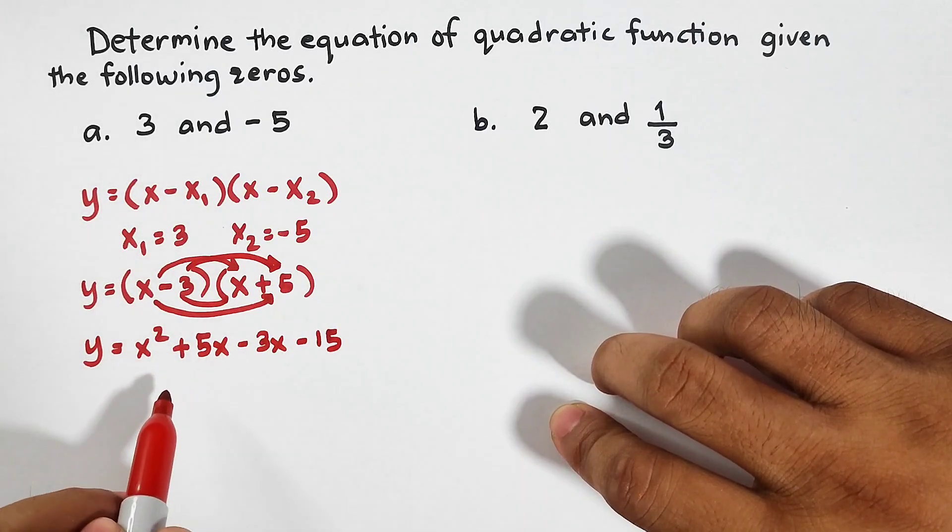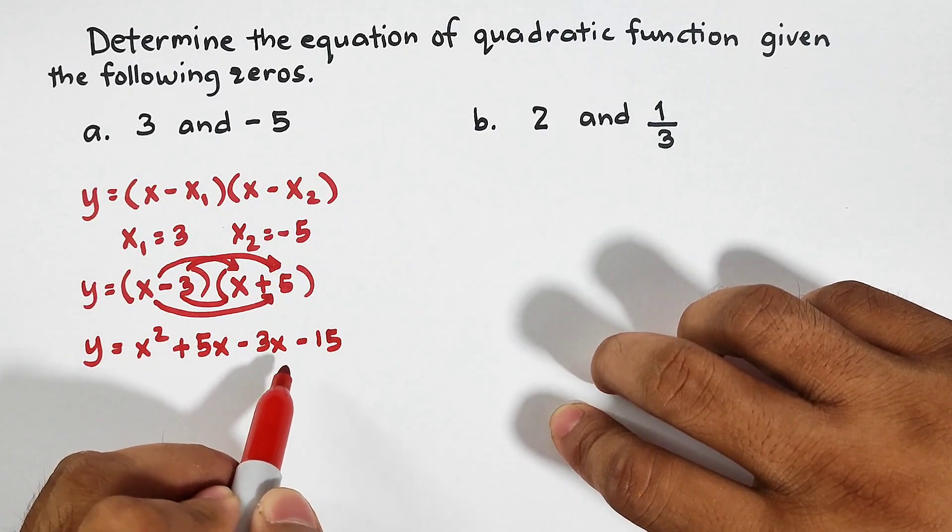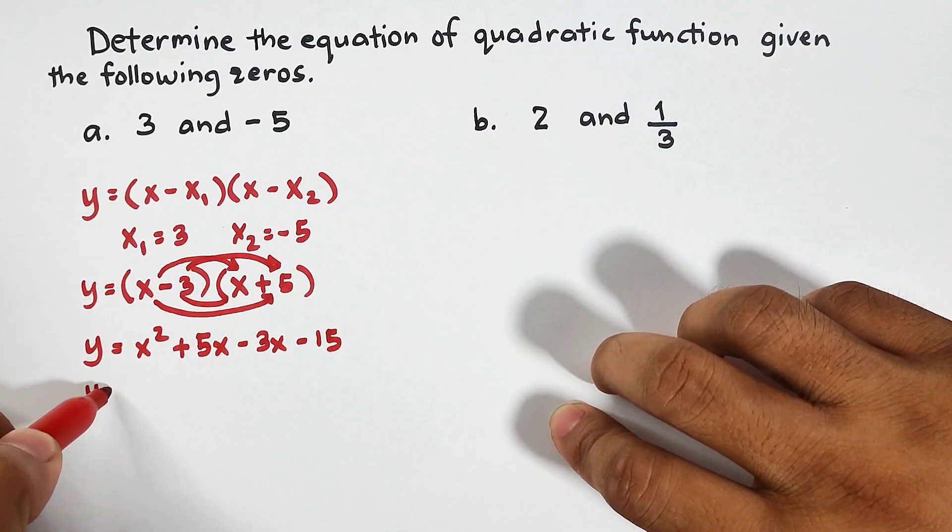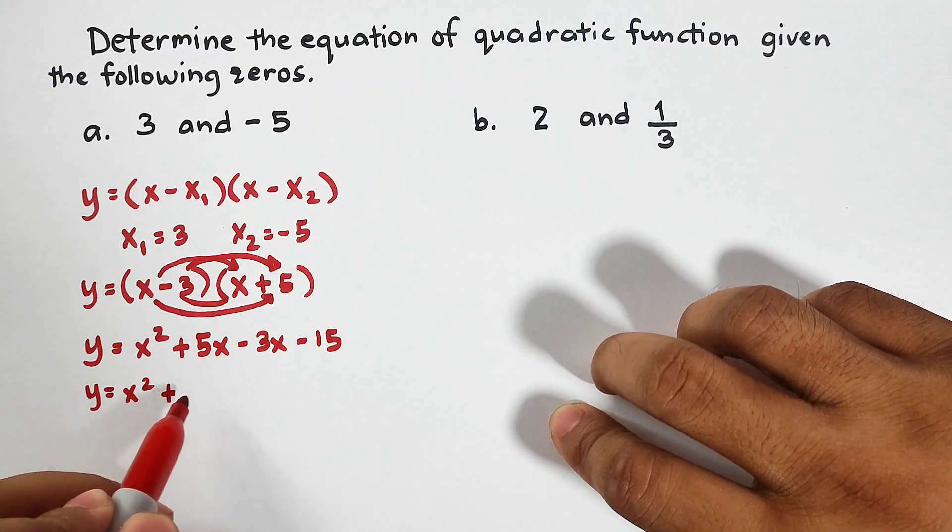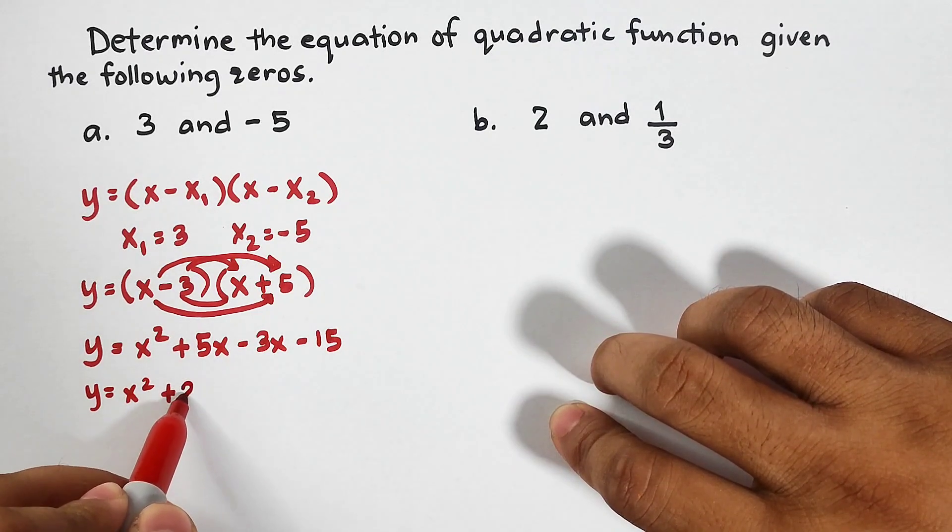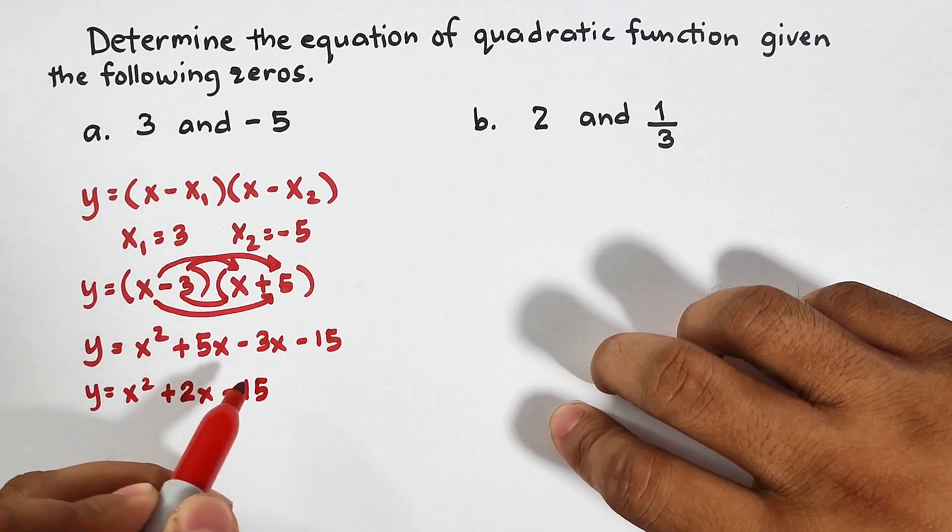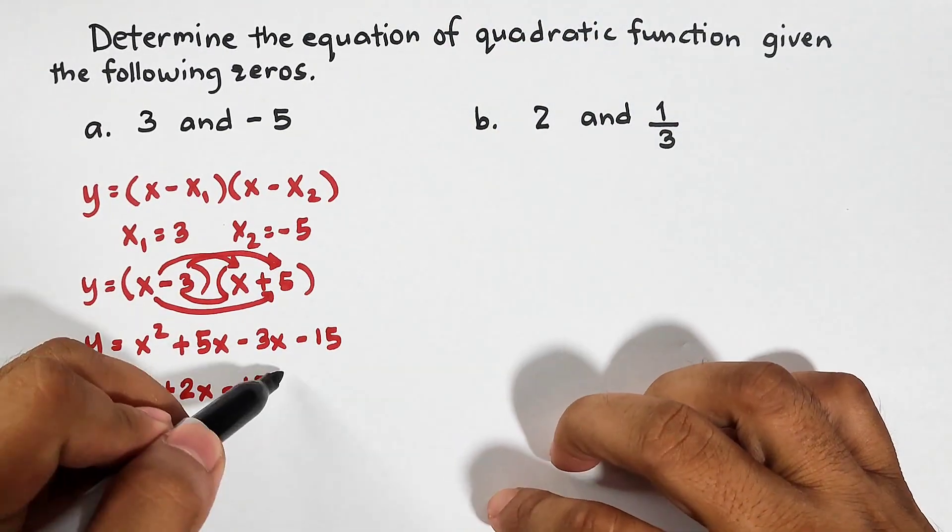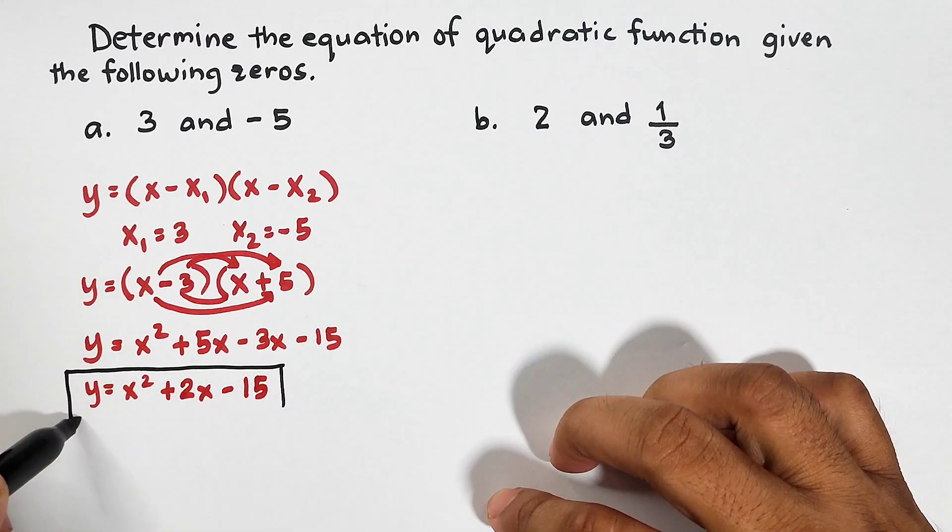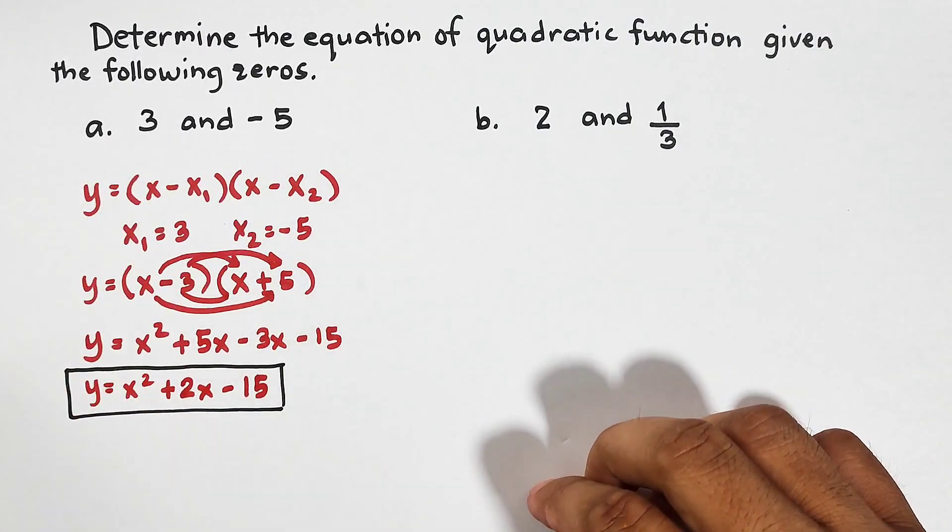And as you can see guys, we need to combine the second term and the third term. Copy y and then x square. What is 5x minus 3x? Definitely, that would be 2x. Then copy minus 15. And this is now the equation of the given quadratic function whose zeros are 3 and negative 5.